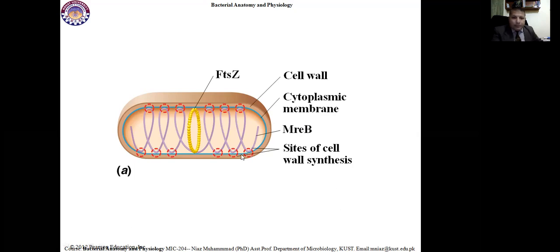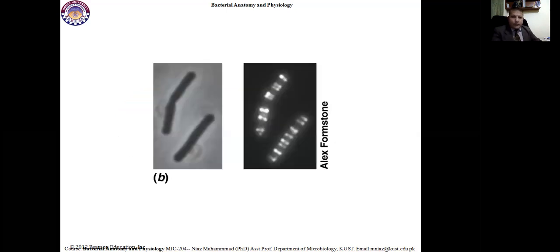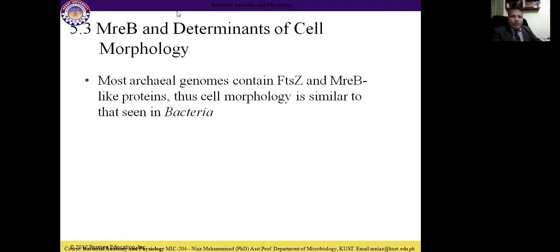Where the MreB protein is attached to the cytoplasmic membrane is where bacterial cell wall forms. As seen in the electron micrograph, the bacterial cell elongates, the septum forms, and gradually it divides into two. Most archaeal genomes contain FtsZ and MreB-like proteins, and their cell morphology is similar to that seen in bacteria.